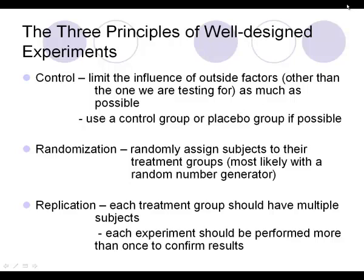Second, Randomization: you don't randomly choose subjects — you randomly assign subjects to their treatment groups, most likely with a random number generator. Third, Replication: you should have multiple subjects in each treatment group, and experiments should be performed more than once to confirm results. Real statisticians experiment for years and years before declaring a drug safe to use.